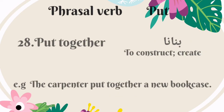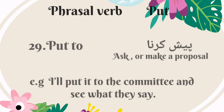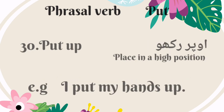The twenty-eighth phrasal verb is 'put together.' It means to construct or create — Urdu mein is ka matlab hai banana. For example: the carpenter put together a new bookcase. The twenty-ninth phrasal verb is 'put to.' It means to ask or make a proposal — Urdu mein is ka matlab hai pesh karna. For example: I put it to the committee and see what they say. The thirtieth phrasal verb is 'put up.' It means place in a high position — Urdu mein is ka matlab hai upar rakhana. For example: I put my hands up.